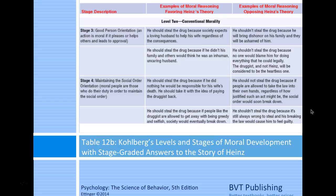Opposing in stage three: he shouldn't steal because it would bring dishonor to his family; or no one would blame him for doing everything legally, and the druggist—not Heinz—would be considered the heartless one. You can see that it doesn't matter if you're for or against Heinz; it is the process of reasoning that Kohlberg was interested in, and that's how he created these tiers of morality.